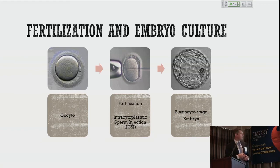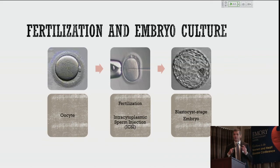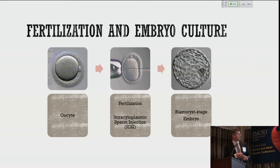After the egg retrieval we have oocytes — single cells. Right before ovulation they go through meiosis and now have 23 chromosomes, ready to be fertilized. We can fertilize eggs by placing sperm into the petri dish if the male partner has an adequate sperm count, letting them find and fertilize the egg naturally. If we're doing genetic testing or if the sperm count is less than ideal, we inject the sperm directly into the egg — this is called ICSI, intracytoplasmic sperm injection. After about five to six days in culture, we have a blastocyst stage embryo — from two cells to about 110 cells.